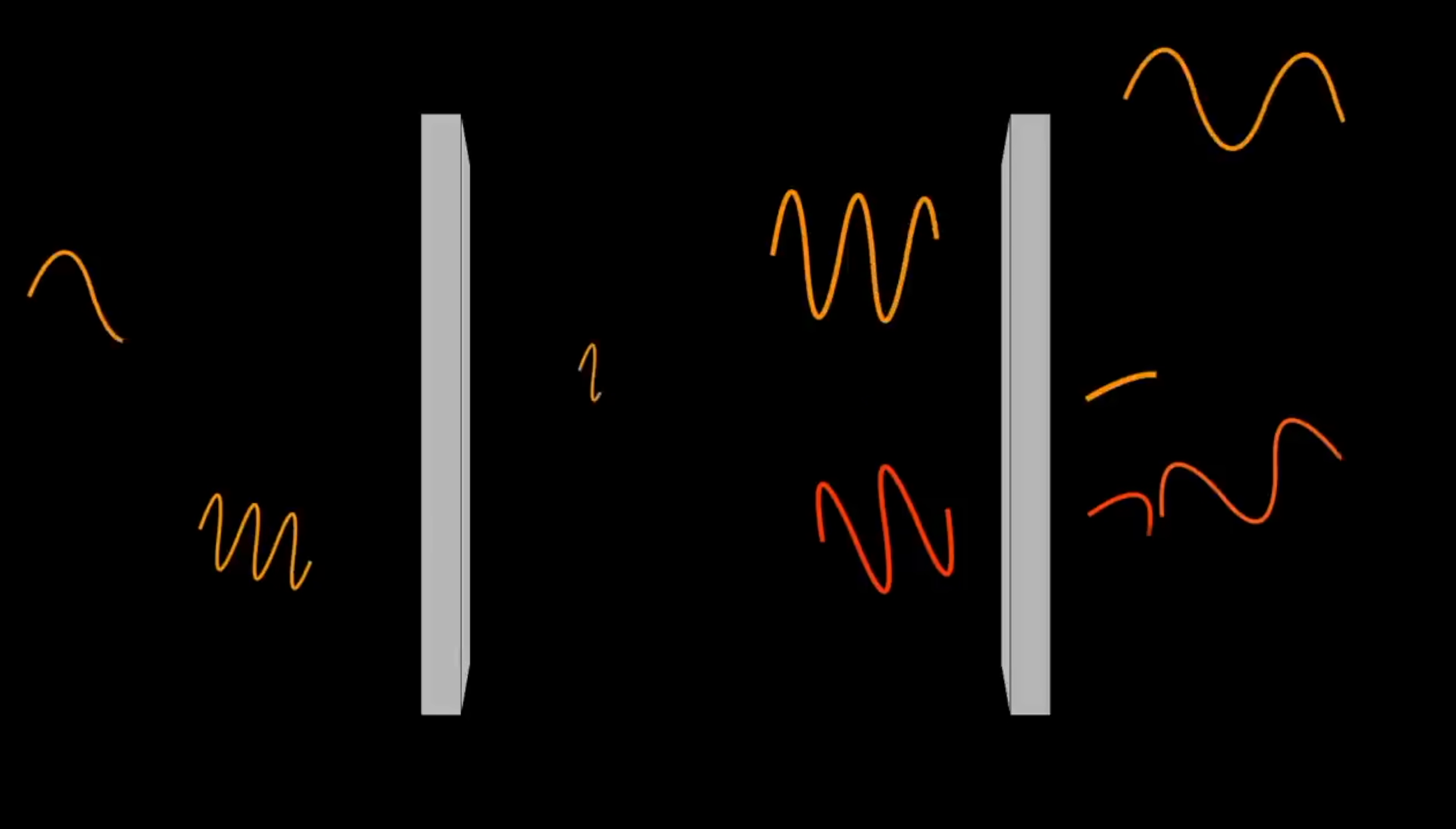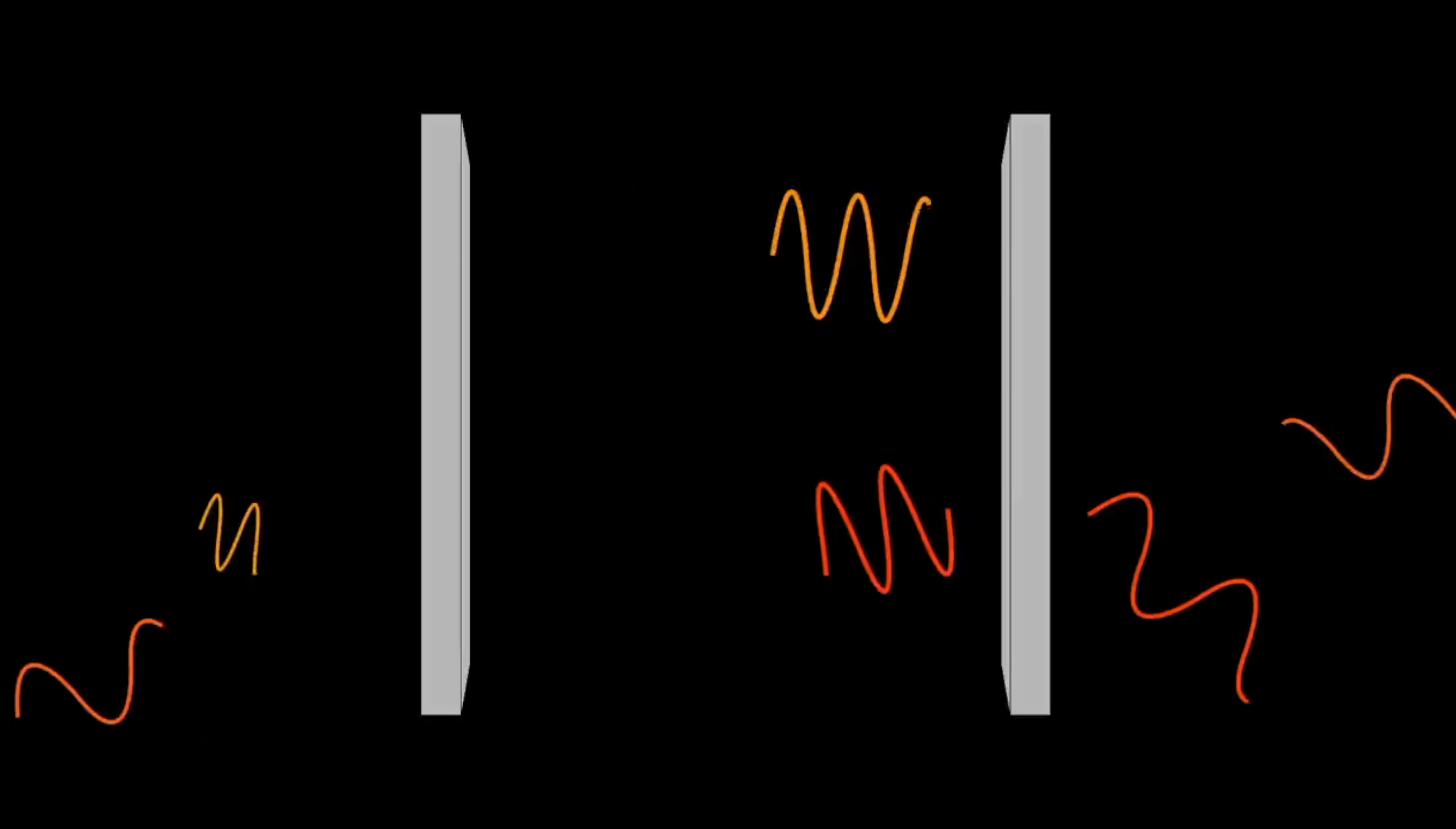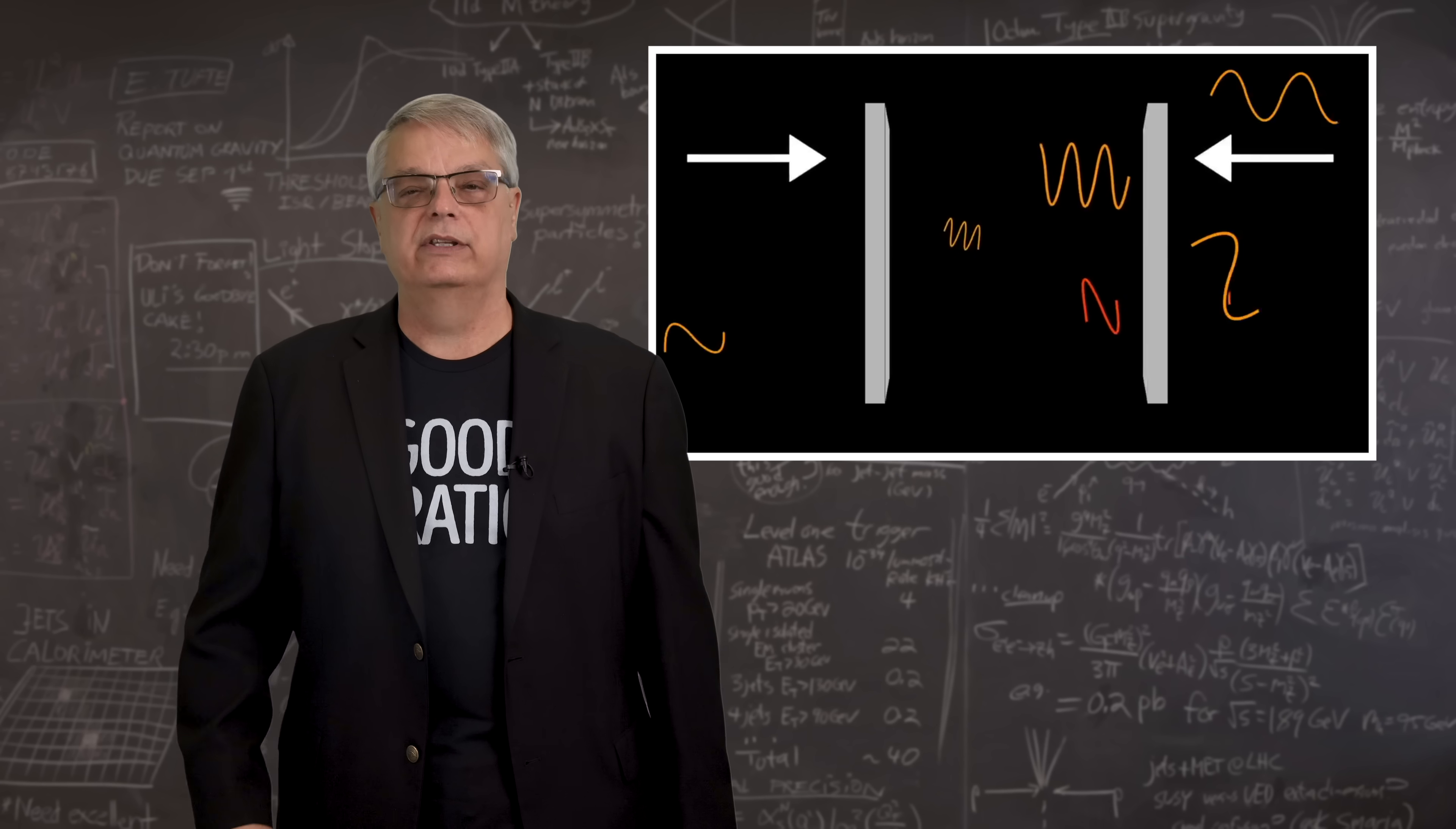If you take two conducting metal plates and place them near one another, and I'm talking really, really close, like separated by a distance equivalent to the diameter of a handful of atoms, those two plates will feel an attractive force. This is called the Casimir effect, and I've made videos about it. As always, the link is in the description.